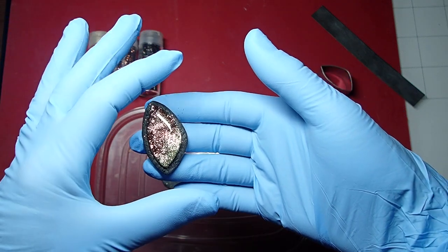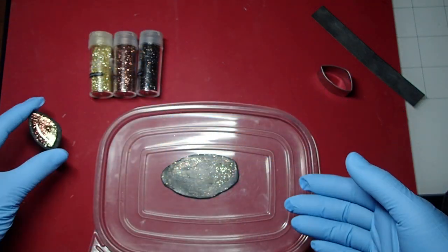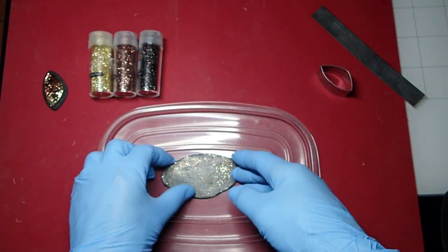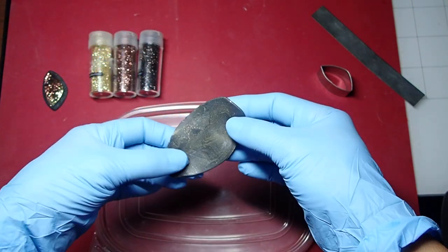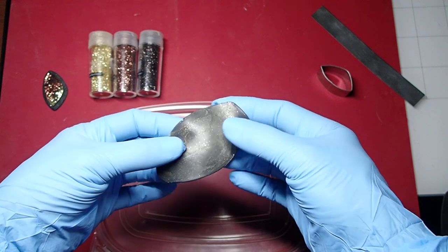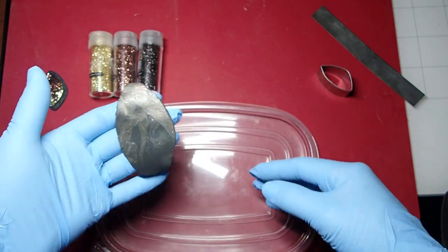So let's get started. I have some scrap clay that I already rolled out. You can see it already has glitter in it, but it really doesn't matter because I was playing with this one. That's where I got the scraps from.